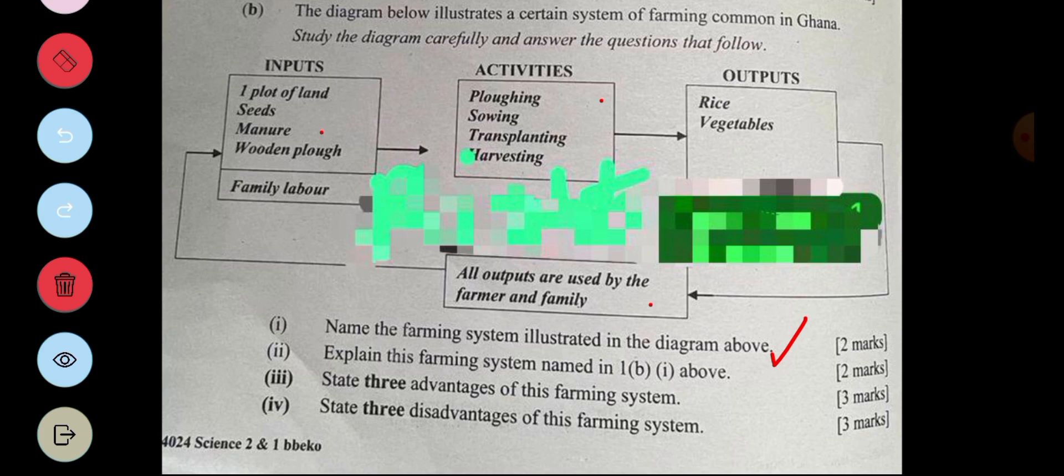So the next one, iii is asking us three advantages of subsistence farming. It provides a reliable source of food for the family. It preserves traditional farming knowledge and it promotes self-sufficiency by reducing dependence. And in this farming system, no inorganic fertilizers are used, so it's more of like an organic farming which protects the environment.